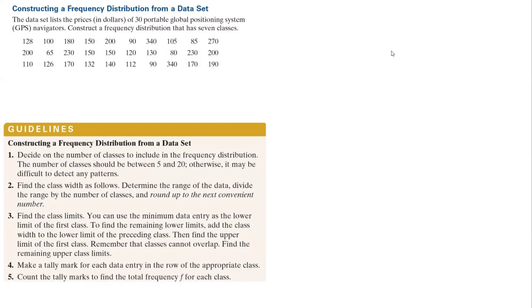First, decide on the number of classes or bins that you want to include. If nothing is given to you, we usually take a number between 5 and 20.